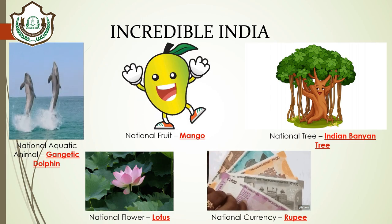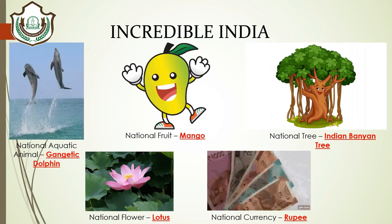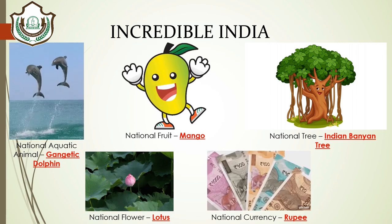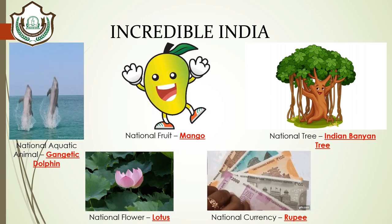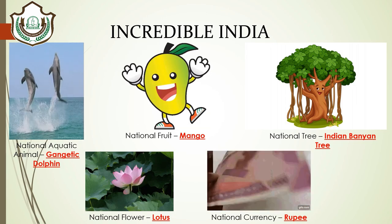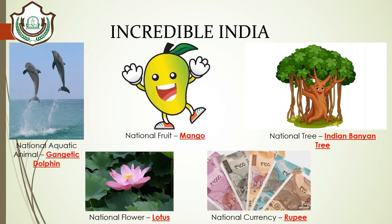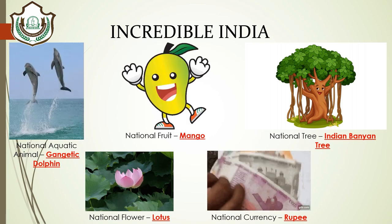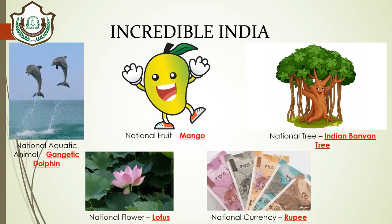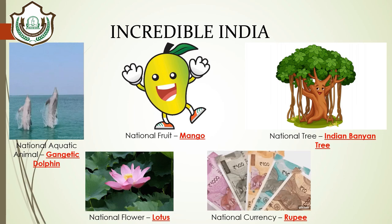Seventh is the national fruit of India — it is also known as the king of fruits, and that is mango. Eighth comes the national tree of India, which is the Indian banyan tree. Ninth: the national flower of India is the lotus. Tenth: the national currency of India is the rupee.